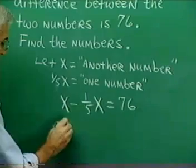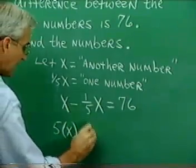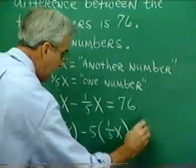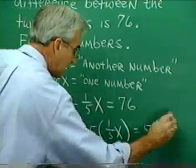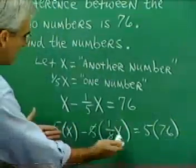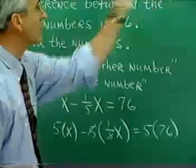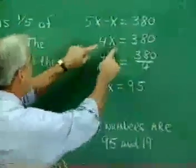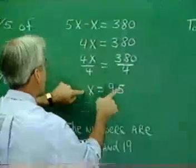So it would be 5 times x, then minus 5 times one-fifth x, and then 5 times 76. The 5's go out here as expected. We have 5x minus x. 5 times 76 is 380, so the equation looks like this. 5x minus x is 4x. Divide by 4 on both sides, we find x to be 95.